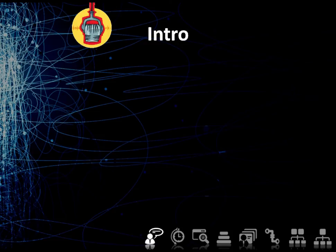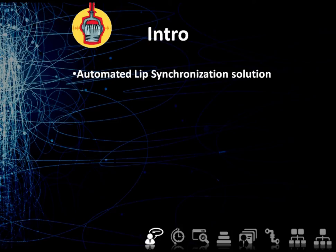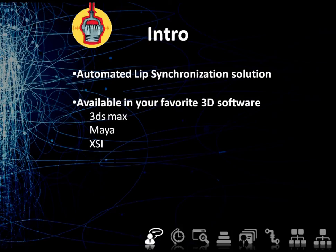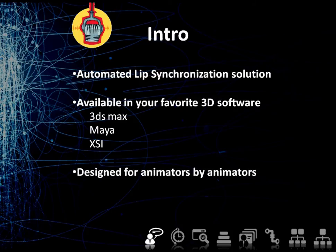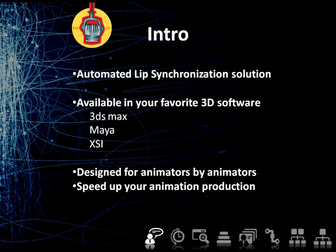Voice-O-Matic is a powerful but easy-to-use plugin that automates the process of lip synchronization of your animated CG characters directly inside your favorite 3D software: 3ds Max, Maya, and Softimage. Voice-O-Matic was designed for animators by animators. Shave off hours of work on your next talking character production — you will be amazed by its speedy results and how easily you will implement and use it in your existing pipeline.